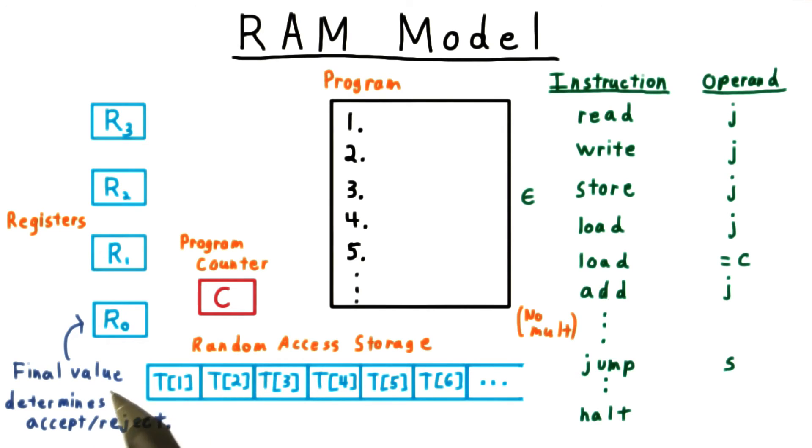The final value in r0 determines whether we accept or reject. Note that in our definition here, there's no multiplication. We can achieve that through repeated addition.